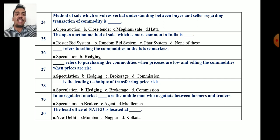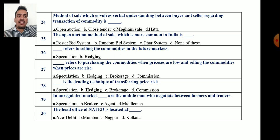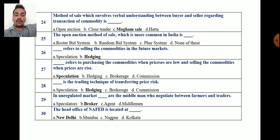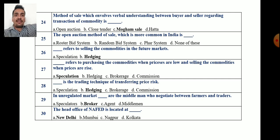Hedging is a trading technique which transfers the price risk. Question 28 and 29: In an unregulated market, blank are the middlemen who negotiate between farmers and traders. Options are: speculators, broker, agent, or middleman. The correct answer is brokers — brokers are the middlemen who negotiate between farmers and traders in an unregulated market.